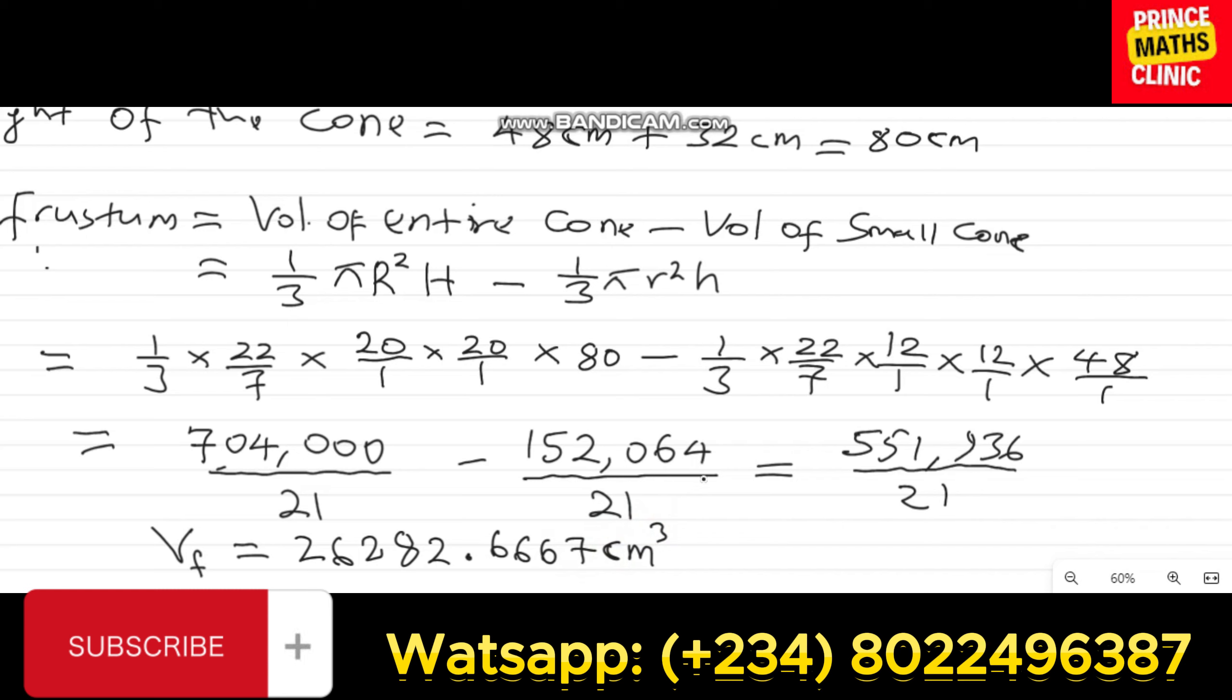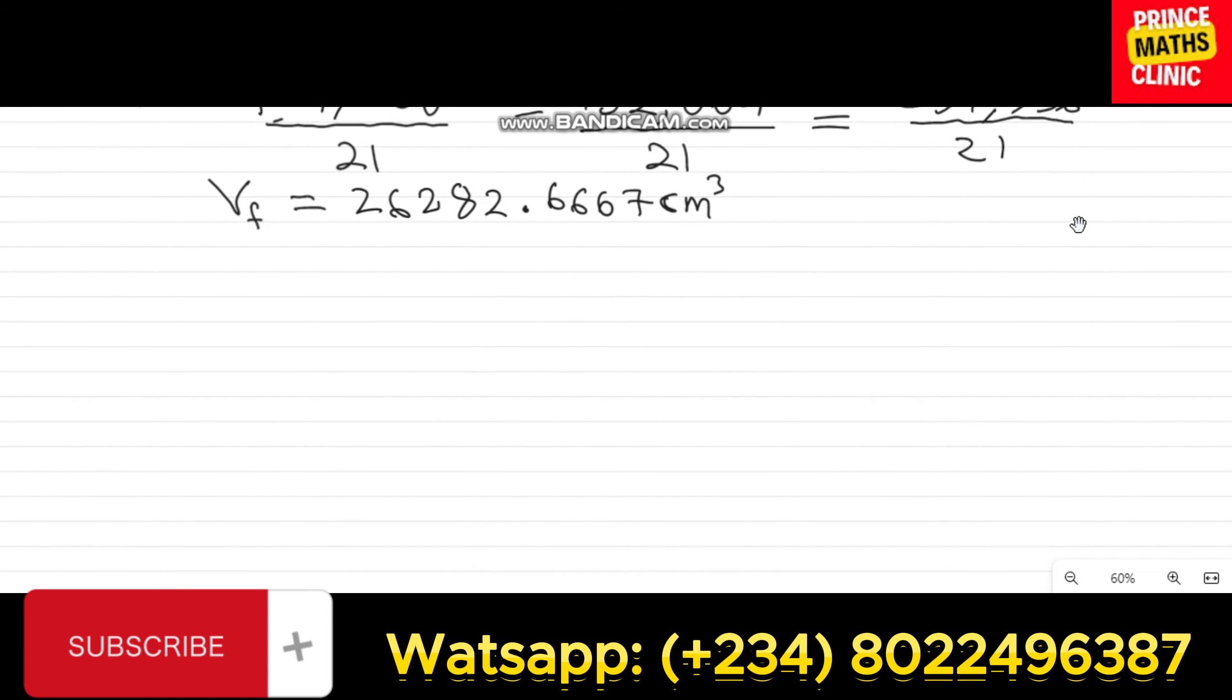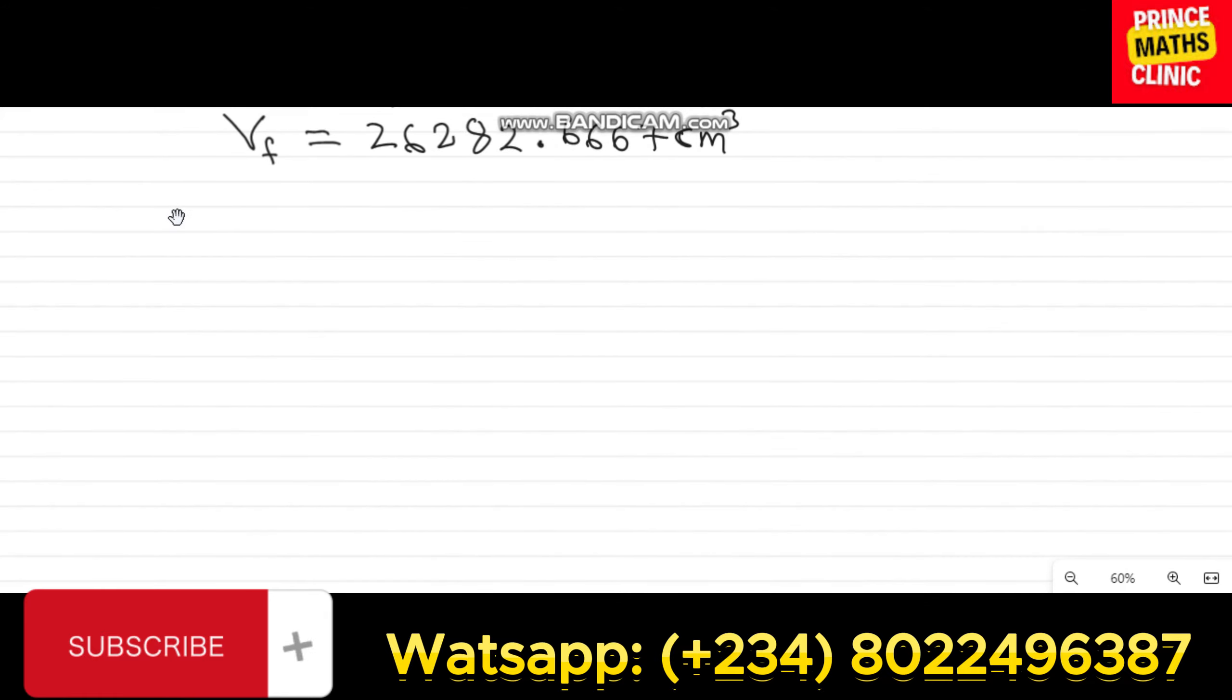But it did not end there. The question said that the frustum was emptied into a cylinder. Or the bucket was emptied into a cylinder. Since it was emptied into a cylinder, we need to find out what is the volume of the cylinder. And for the sake of those of us that may not understand, a cylinder is a shape that looks like this where the radius of the cylinder is given to us as 28 centimeters.